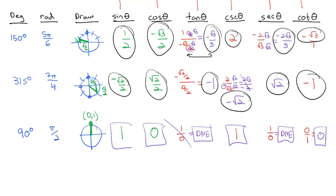So we end up with six trig ratios: sine, cosine, tangent, cosecant (which is the reciprocal of sine), secant (which is the reciprocal of cosine), and cotangent (which is the reciprocal of tangent). Those reciprocal relationships will be very important, especially in the next chapter. For now, we're just getting used to calculating the values.